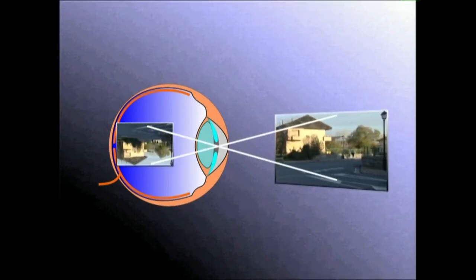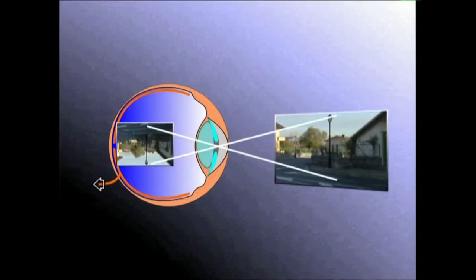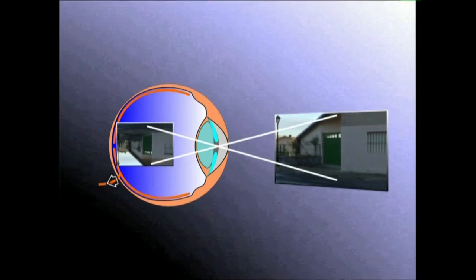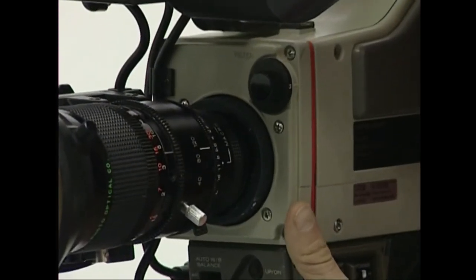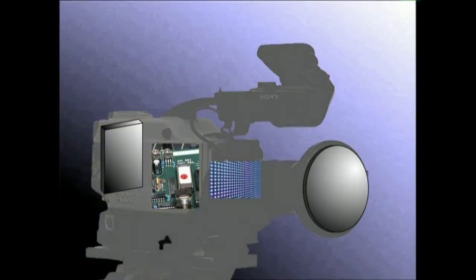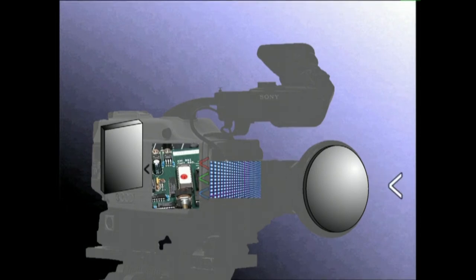Gizakion begian irudia buruz behera eratzen da barruko geruzan edo erretinan. Erretina argiarekiko sentikorra da, eta han eratutako irudiak sortutako seinale elektrikoak ikusnerbioaren bidez garuneraino bideratzen dira. Garunak irudiari buelta ematen dio eta horri guztiari esker ikusten dugula esaten dugu. Bideokameran irudia foku planoan eratzen da, hori ere buruz behera. Foku planoan kokatzen da fotodiodo sentikorrez osatutako euskarri sentikorra. Fotodiodo horiek argizko seinaleak seinale elektriko bihurtzeaz arduratzen direnak dira. Gero, seinale elektriko horiek zirkuitu elektronikoen bitartez euskarri magnetikoan ezartzen eta biltzen dira.